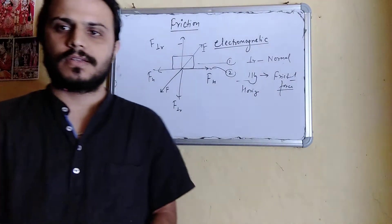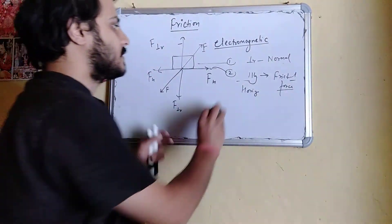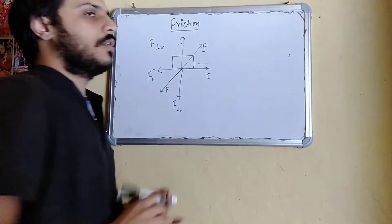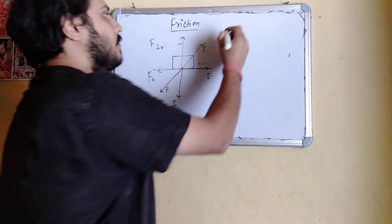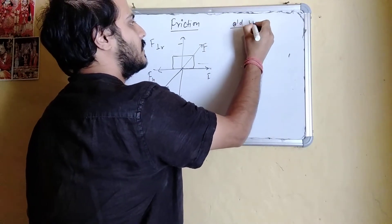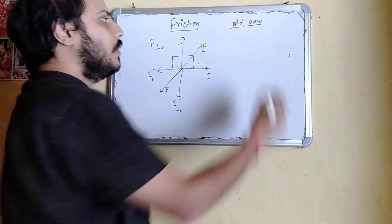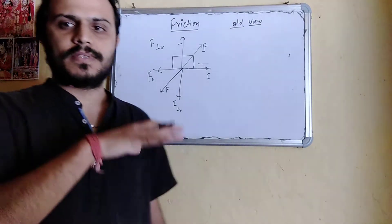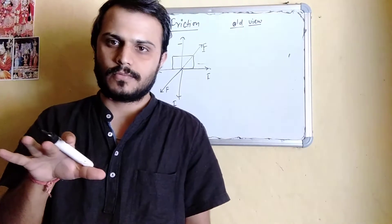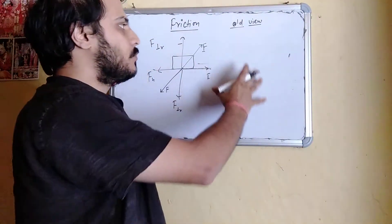Now I am coming to the reason for friction. What is friction, and why is friction? We have two types of views: one is the old view and the other is the modern view. In the old view, when we see a surface with the naked eye, the surfaces appear smooth to us.